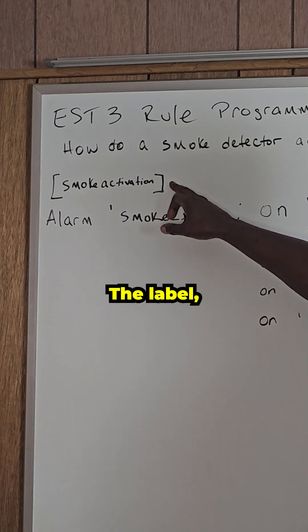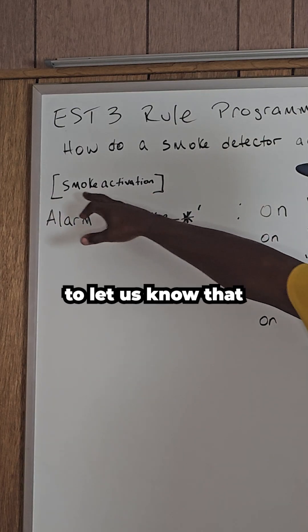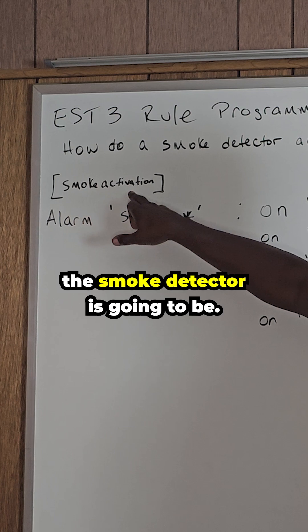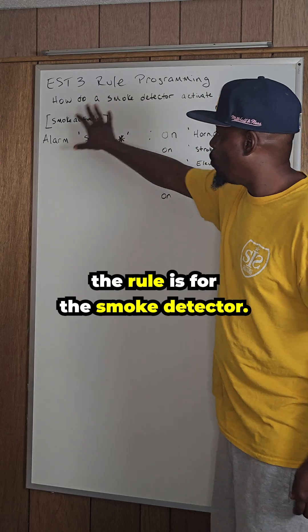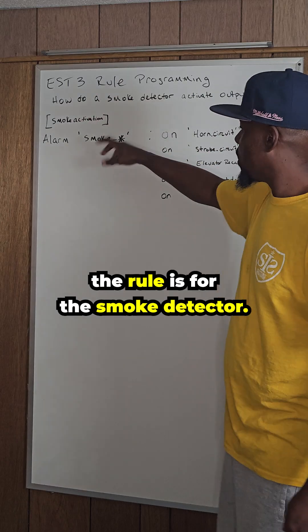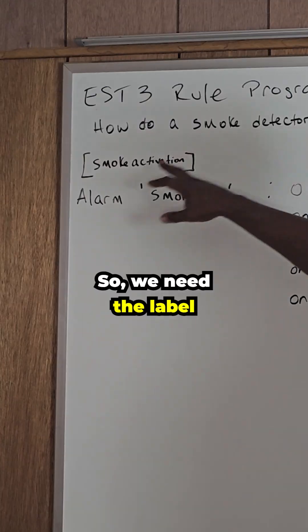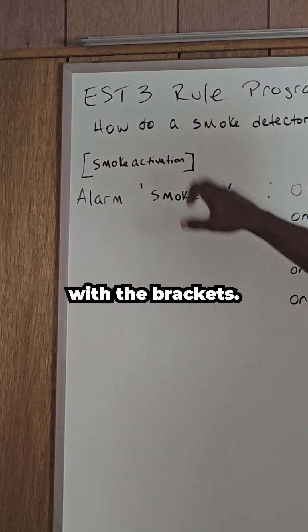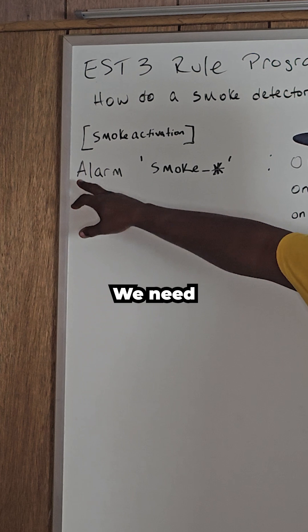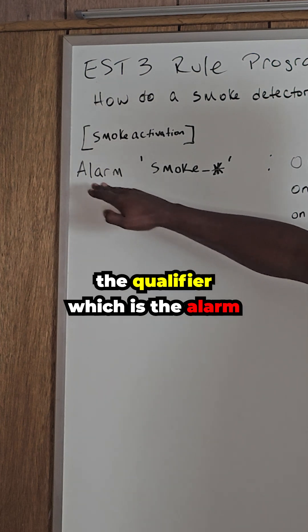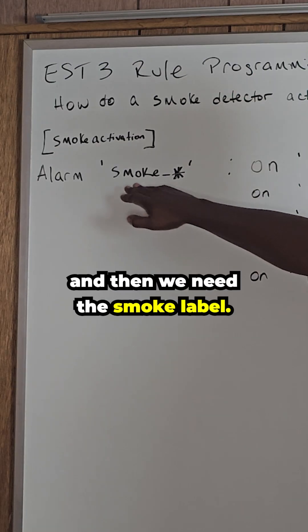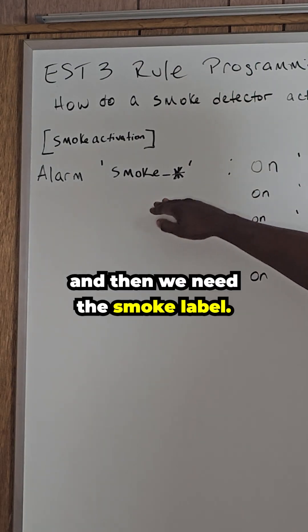The label is very important — it lets us know what the rule is for the smoke detector. So we need the label with the brackets, we need the qualifier which is the alarm, and then we need the smoke label.